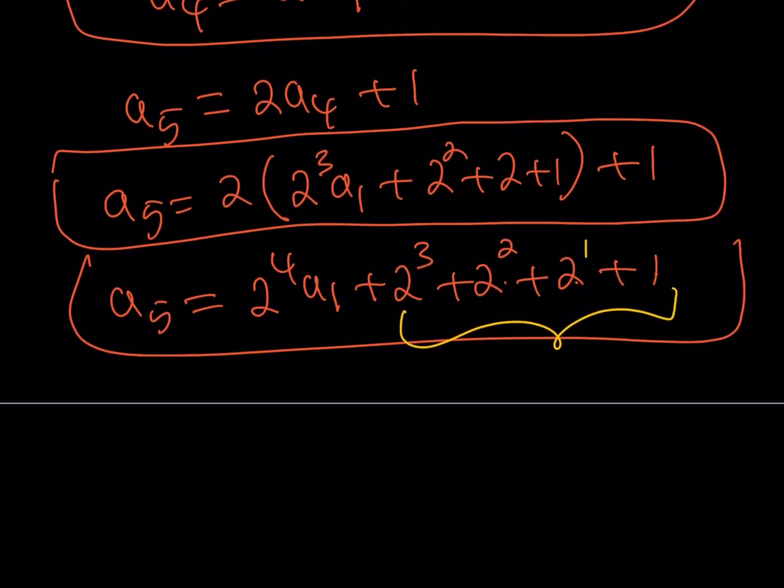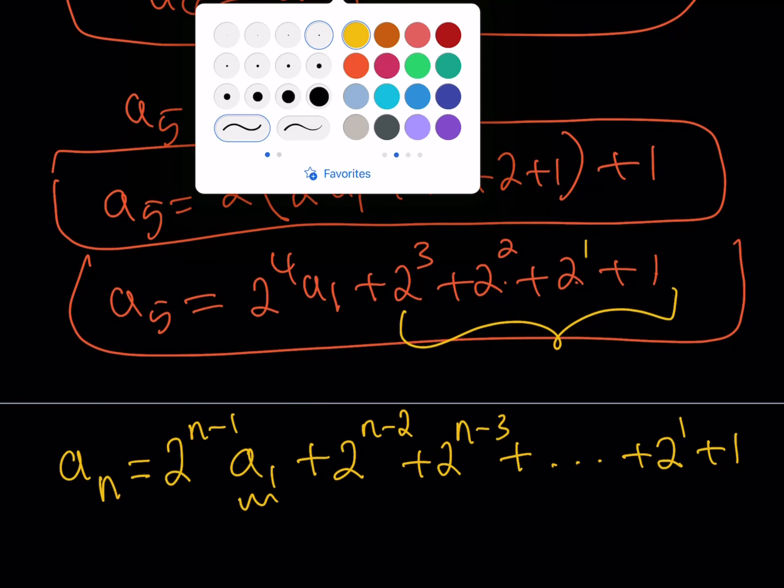If I am trying to write the expression for A_n, then I'm supposed to start with 2 to the power n minus 1, and it's going to be multiplied by A1. And then, the power of 2 will be reduced 1 by 1 until we hit 2 to the power 0, which is 1. So the next one is going to be 2 to the power n minus 2, then 2 to the power n minus 3, dot dot dot, 2 to the first, and then 1. That's my answer. But I'm going to simplify this a little bit.